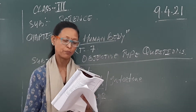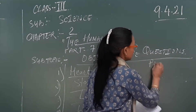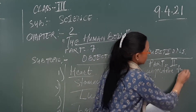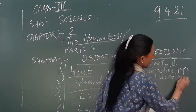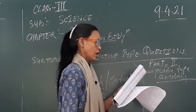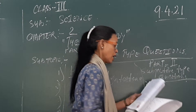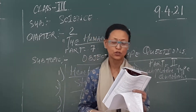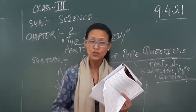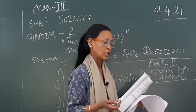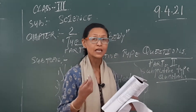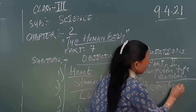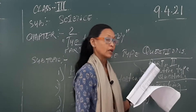Part Two is subjective type questions. We will do 'Name the Following.' First question: a disorder caused due to air pollution. We cough, we sneeze, we have a headache — we may even have lung cancer. So a disorder caused due to air pollution — you can write coughing.